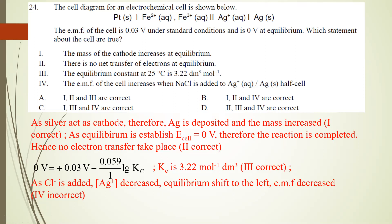At the cathode: Ag+ + e- → Ag, so you see an increase in mass. Since there is no net transfer of electrons at equilibrium, the reaction is already complete and there is no more electron transfer. For statement C, the equilibrium constant is 3.22. Substituting: 0 = 0.03 - 0.059/1 × log Kc, so Kc = 3.22.